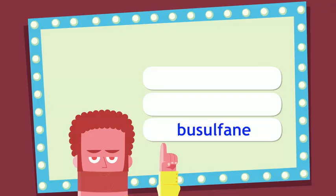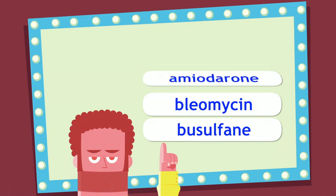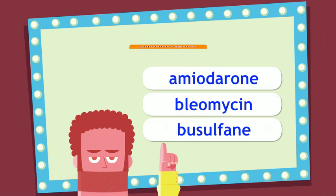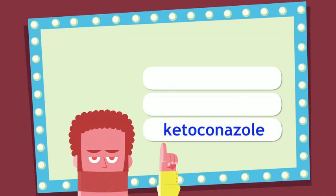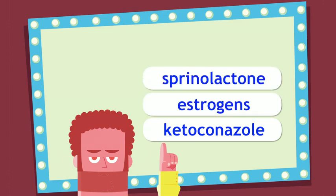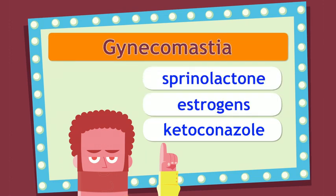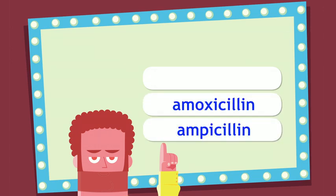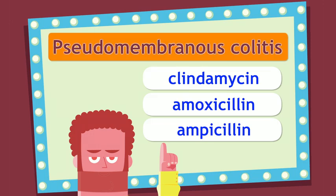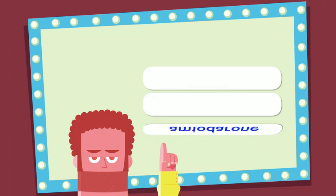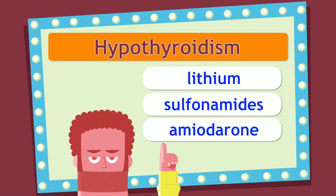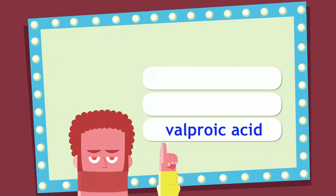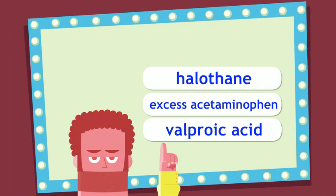Game show #2 review: Busulfan, bleomycin, amiodarone — pulmonary fibrosis. Ketoconazole, estrogens, spironolactone — gynecomastia. Ampicillin, amoxicillin, clindamycin — pseudomembranous colitis. Amiodarone, sulfonamides, lithium — hypothyroidism. Valproic acid, excess acetaminophen, halothane — hepatic necrosis.